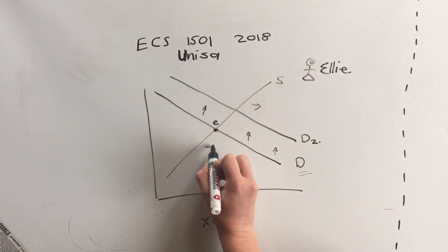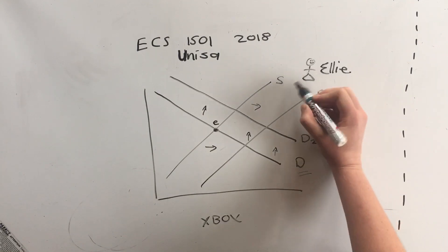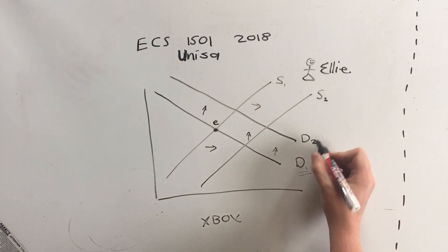So now our supply is also moving this way. There's supply 2, that was supply 1, that's supply 2, demand 1, demand 2.